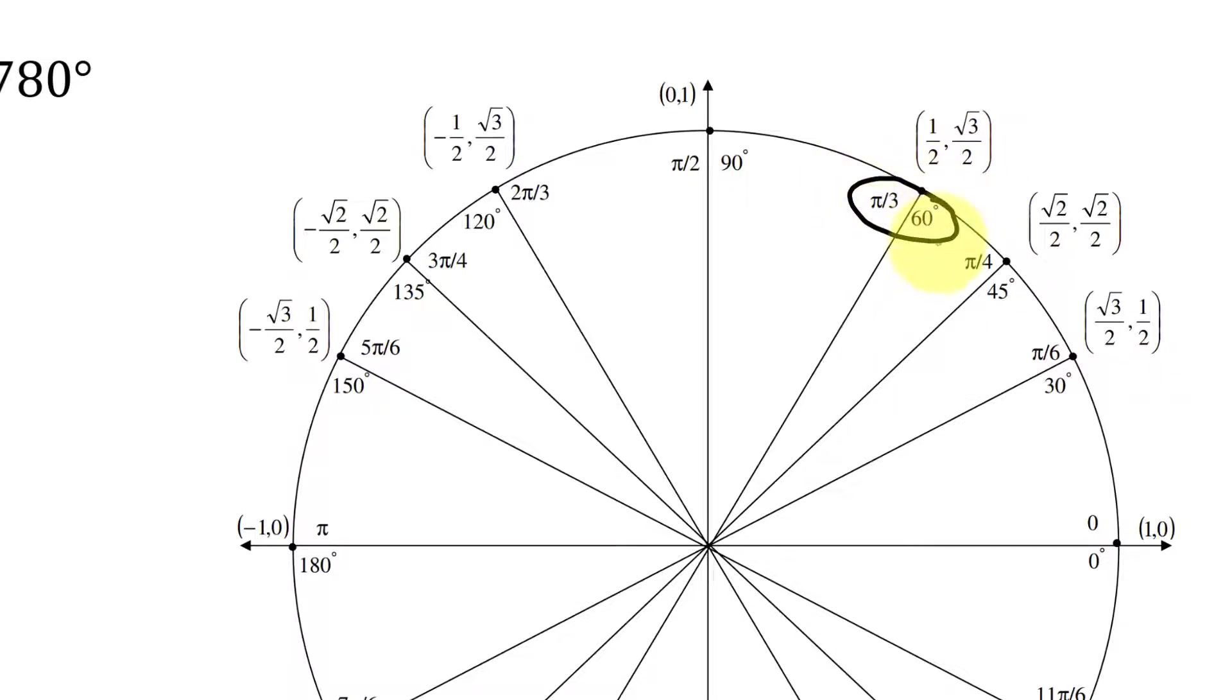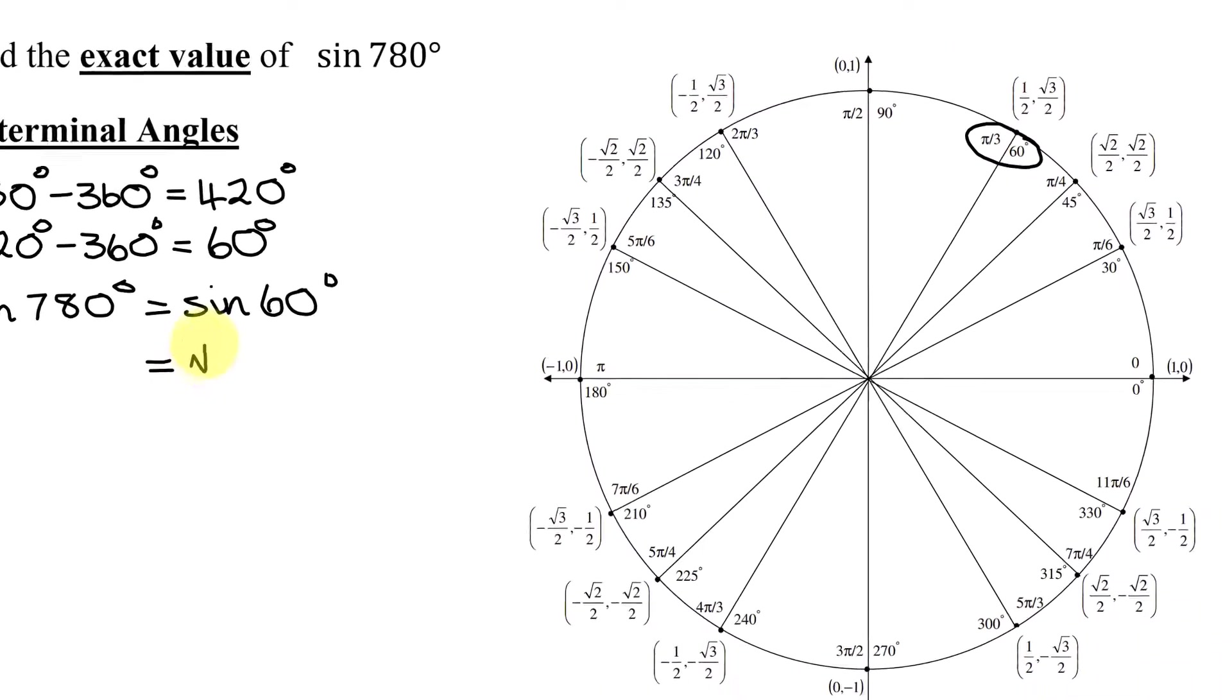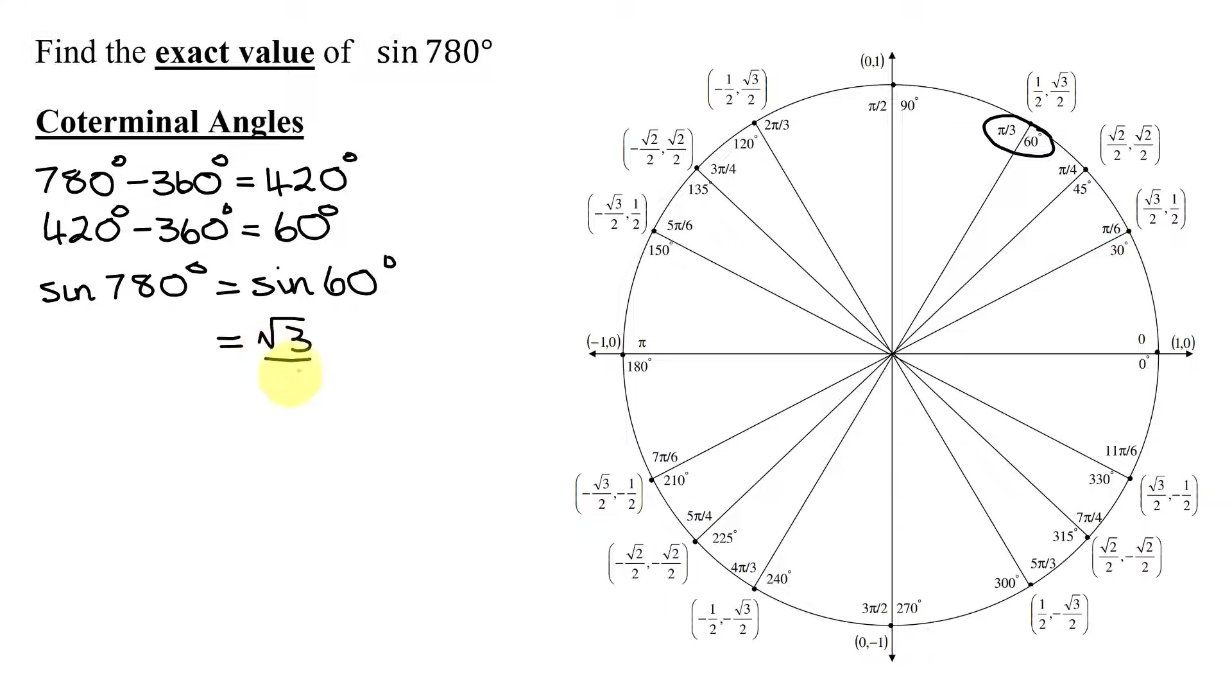So since I need the sine of 60 degrees, it's the y-coordinate. So it's the square root of 3 over 2. So the sine of 780 degrees is the square root of 3 divided by 2.